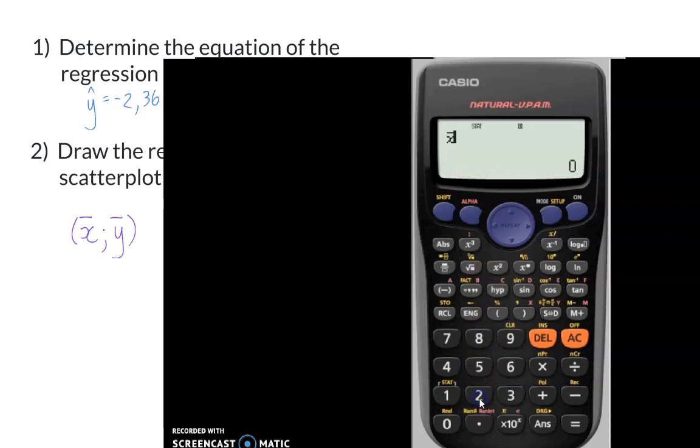So if I now choose option 2, I will get the mean for the years experience, and that is 9 comma 9.